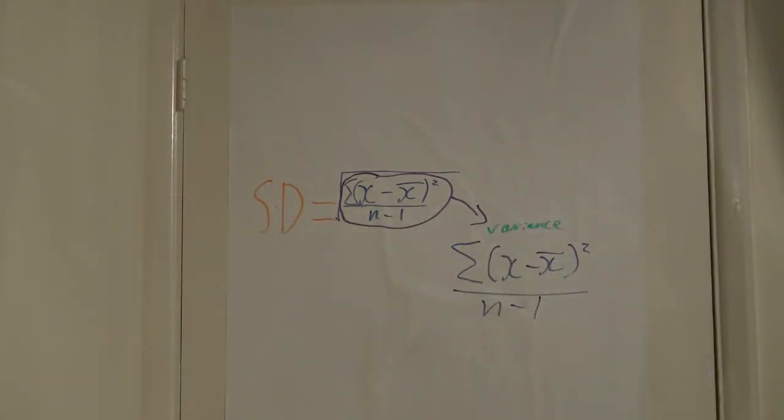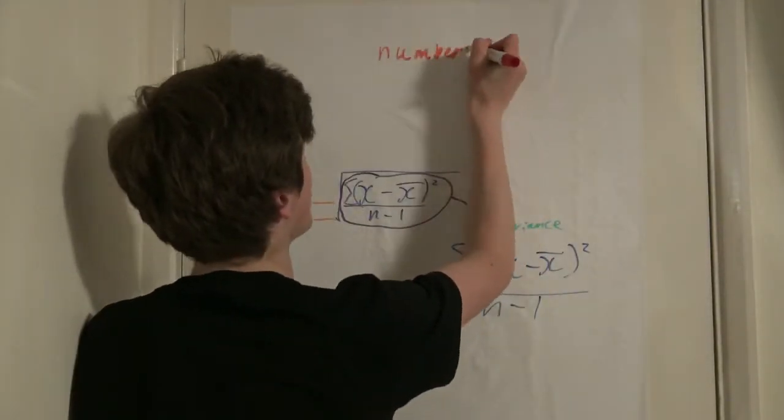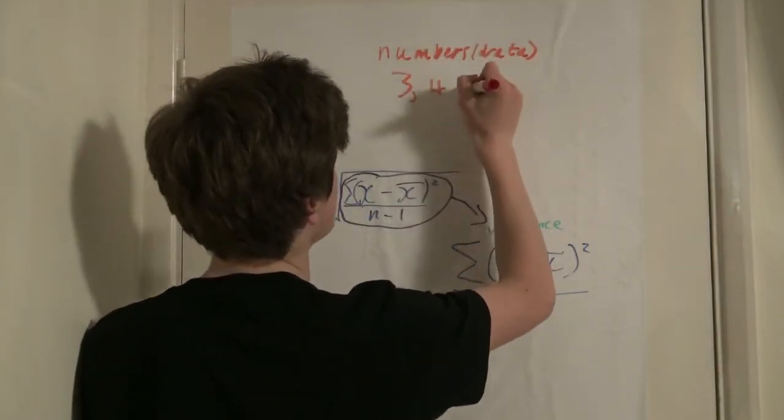So, how do you work out the variance? As you can see on the top part of the equation, you are being asked to find the sum of each number minus the mean squared. So first you must find the mean. Let's use the numbers 3, 4 and 5 as an example.